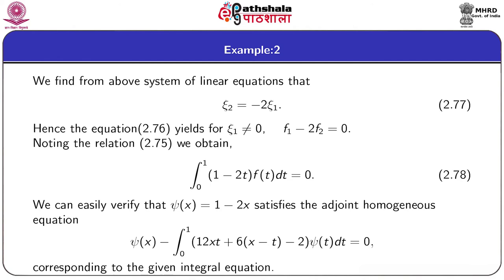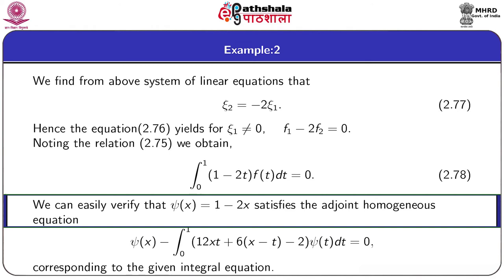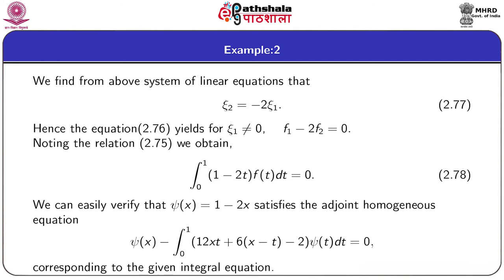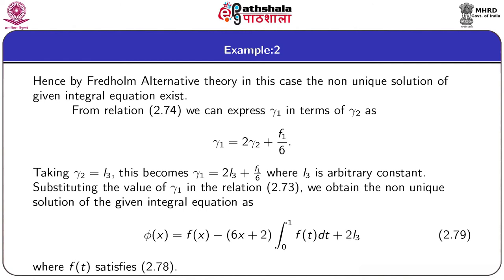In 2.78, the integral from 0 to 1 of (1 − 2t)f(t)dt = 0. We can verify that the function ψ(x) = 1 − 2x satisfies the adjoint homogeneous integral equation. Hence, by Fredholm alternative theory, in this case a non-unique solution of the given integral equation exists.